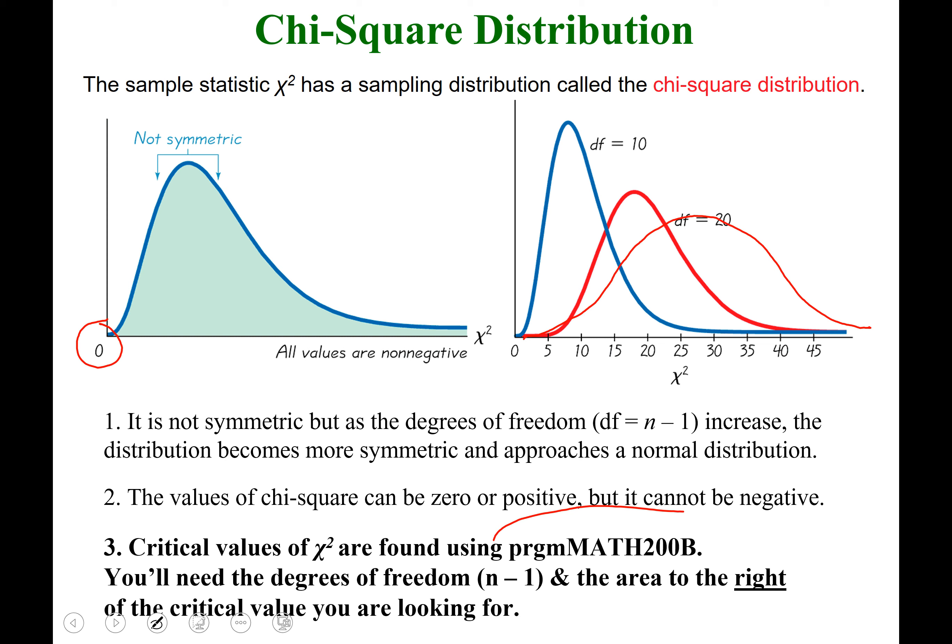Program math 200b is something I will put on your calculator. You can also go to the math success center or get it from a classmate if you have the right cable. It's a program not already on your Texas Instrument, but it can be loaded by plugging a cable into a calculator that already has it. If you don't want to use math 200b, you can use paper chi-squared tables instead — there are ways to get through all of these problems using those charts.